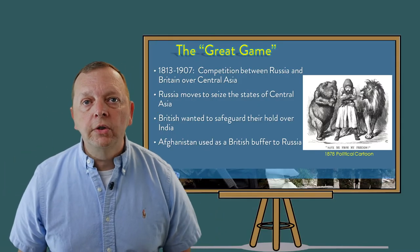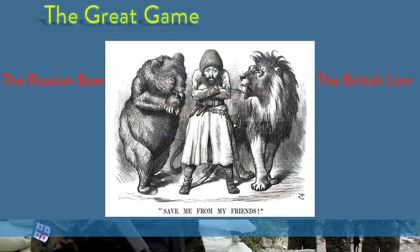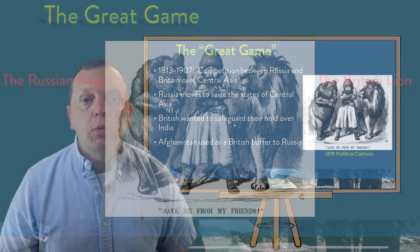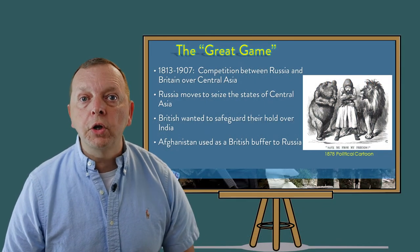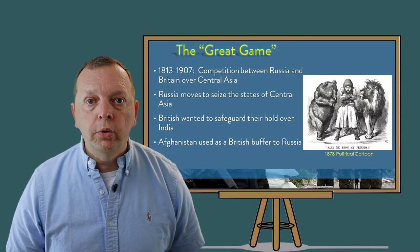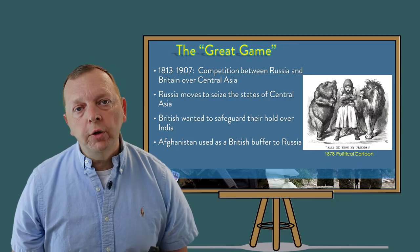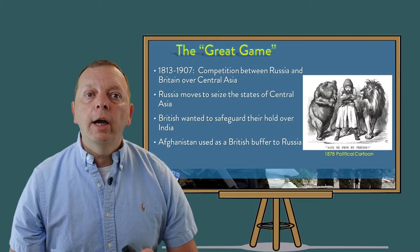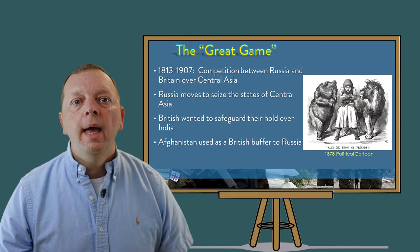In the 1800s, Central Asia was another type of crossroads — one that the British felt would bring the Russians down into British India. Between 1813 and 1907, Britain and Russia were in an economic and military competition to win over the people of Central Asia: the Great Game. Russia was playing to secure territory in Central Asia, and the British were playing to keep the Russians from interfering with British India. The game concluded in 1907, when the Russians allowed the British to draw the borders of Afghanistan and create Afghanistan as a buffer between Russian-controlled Central Asia and British India.